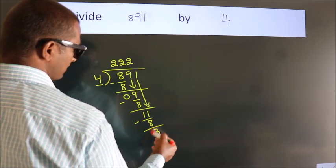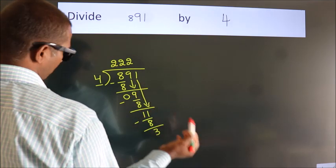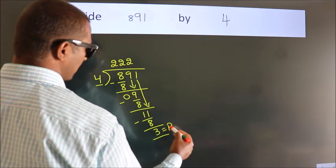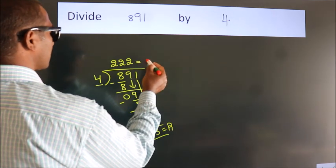After this, no more numbers to bring it down. So, we stop here. This is our remainder. This is our quotient.